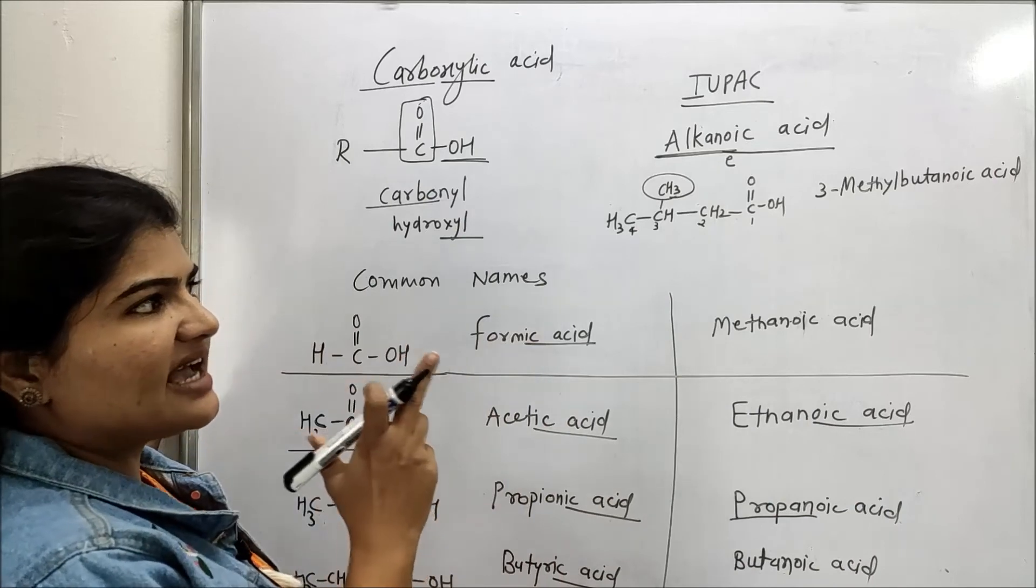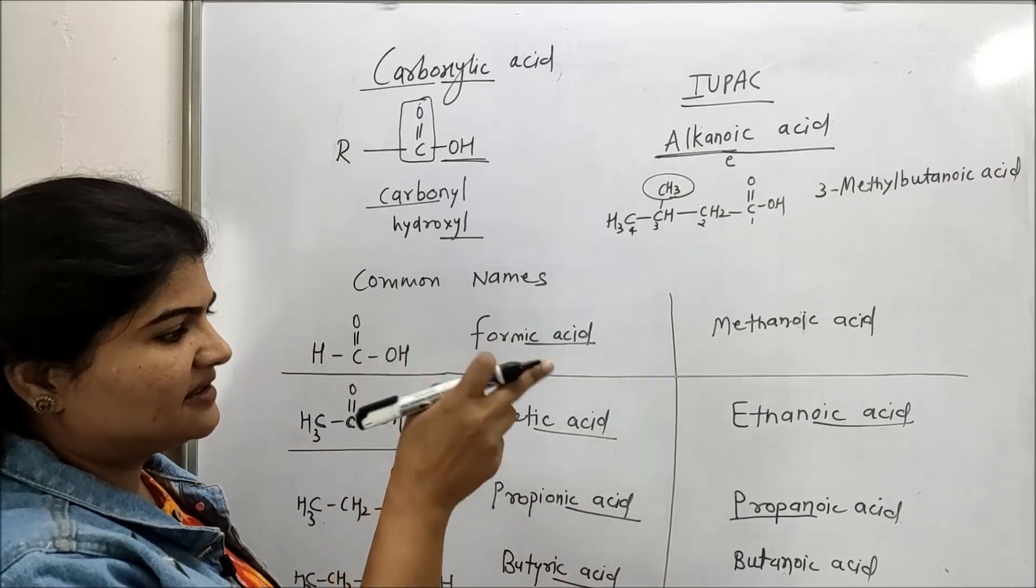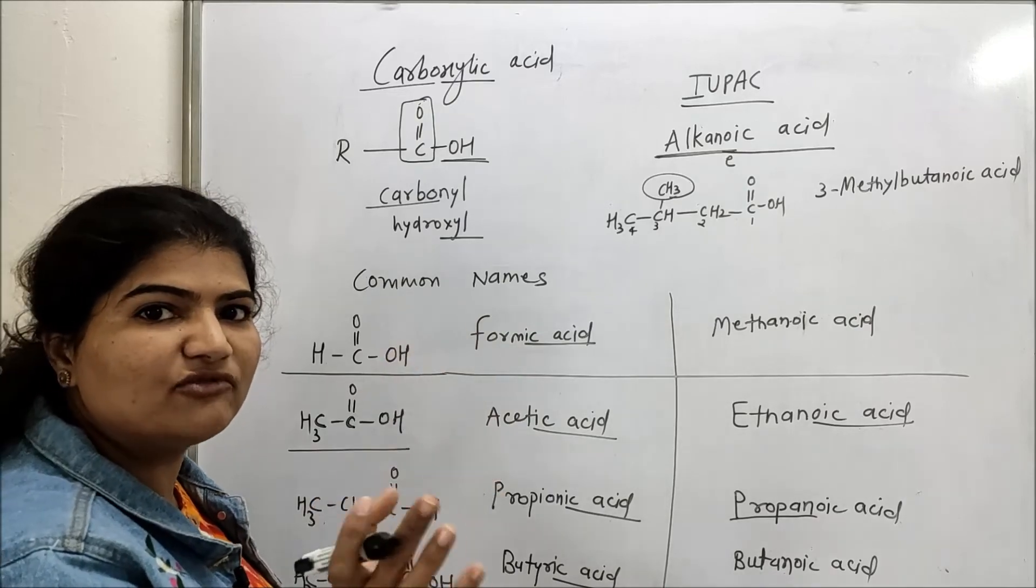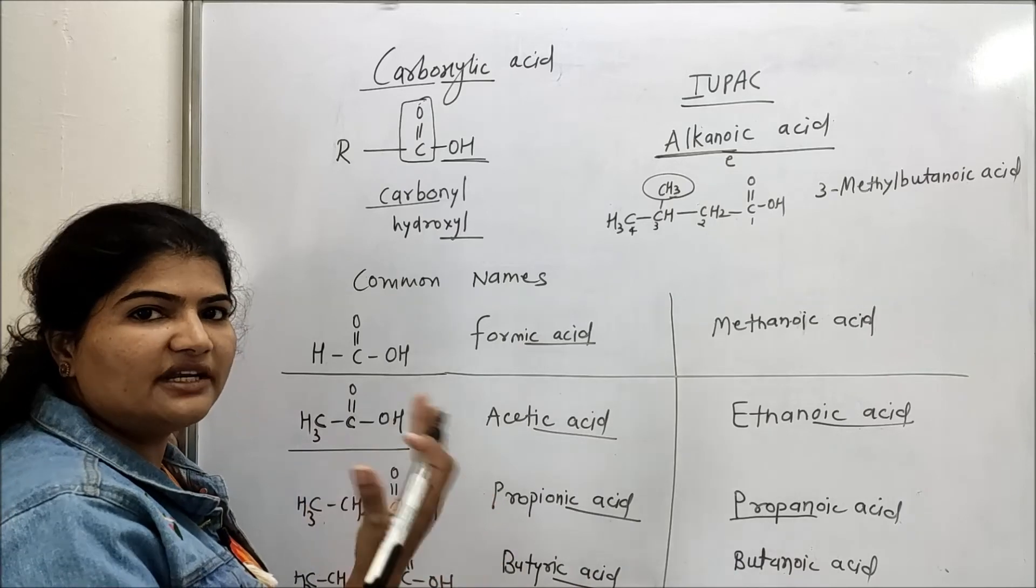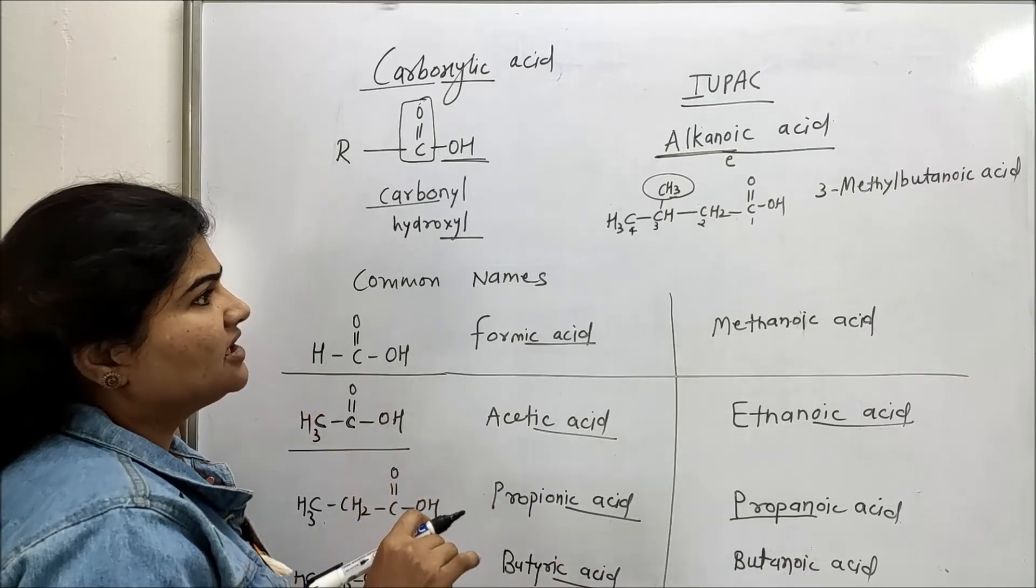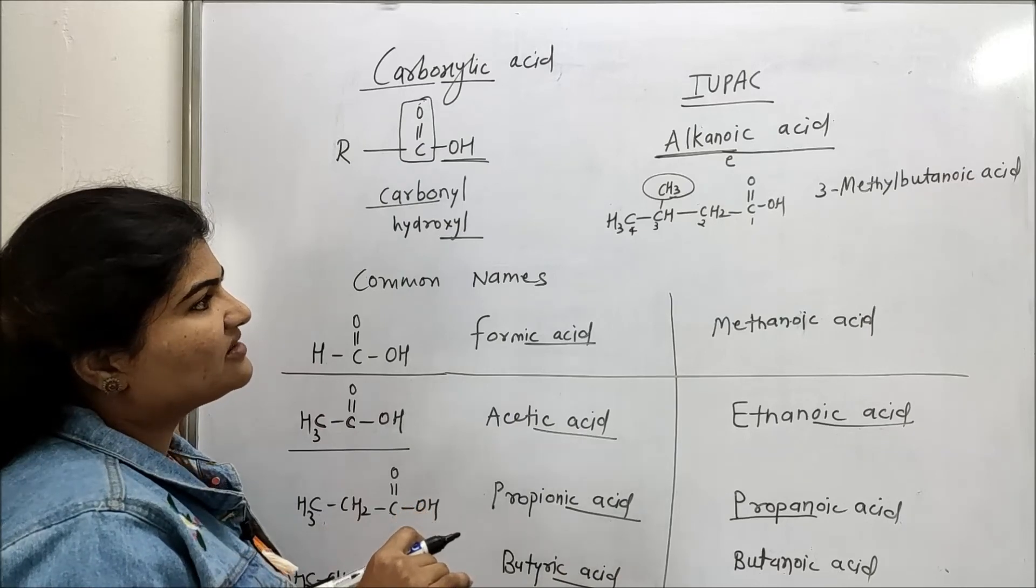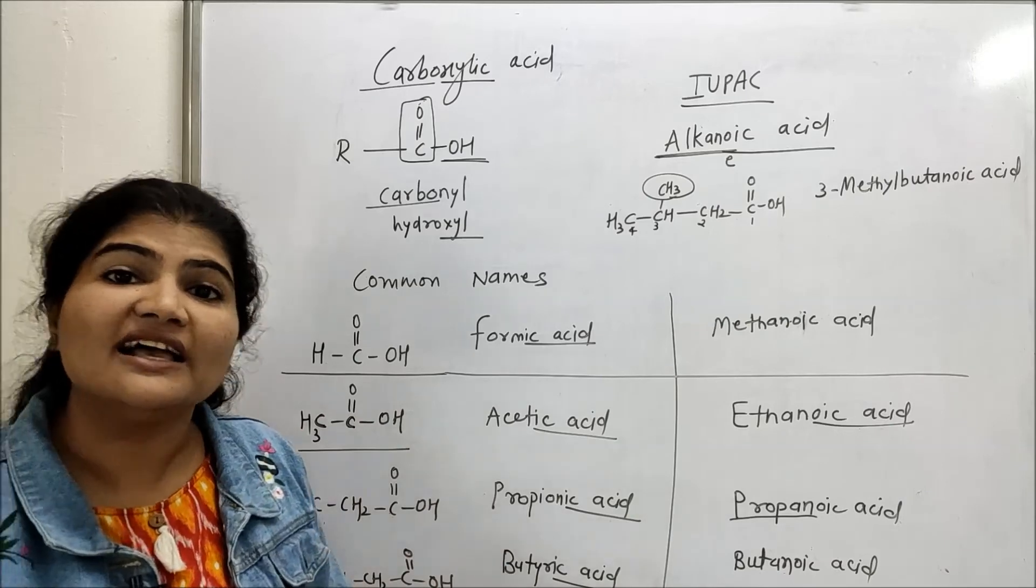Now for carboxylic acids, it is allowed in the IUPAC systems to write two word name. Otherwise, we have to write only one name. For acids and acid derivatives, it is allowed to write two word name in IUPAC. Okay, just remember it. So yeah, this is how we are going to give common names and IUPAC names to carboxylic acids.